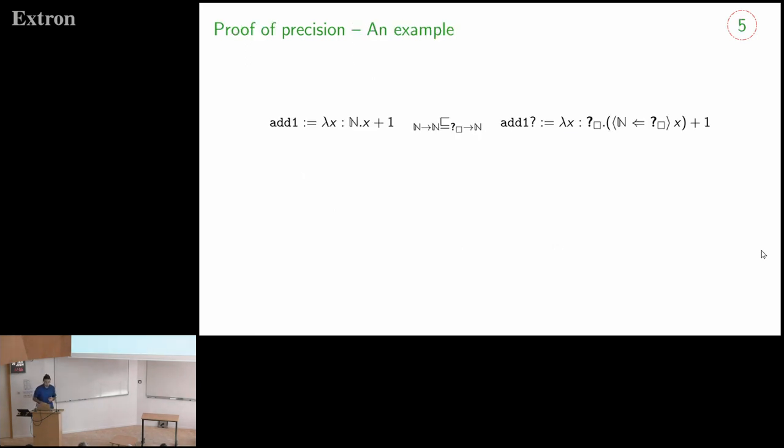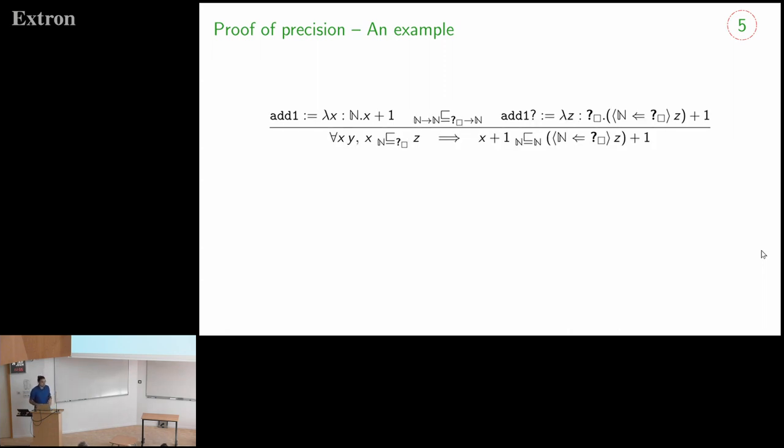And so how will we use this kind of precision proposition? Well, let's see an example. Here I have two functions. One function, which is just the successor that's taking an integer and returning the next integer. And another function that's taking an unknown term and casting it to a natural number and then adding one. I'm claiming that these two functions are in precision relation.